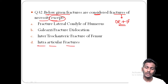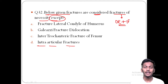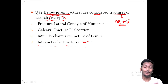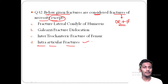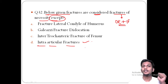Option D — intra-articular fracture — involves the joint, so there may be dislocation and deformity associated with it. In intra-articular fractures there is a risk of cutoff of blood supply or nerve supply. Therefore, intra-articular fractures are always treated with open reduction and internal fixation. This is the first fracture of necessity.